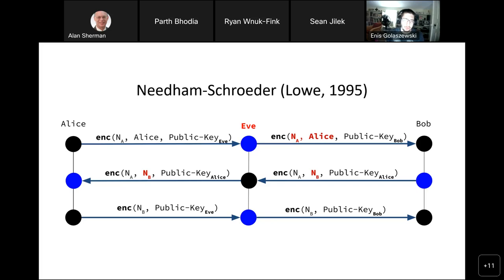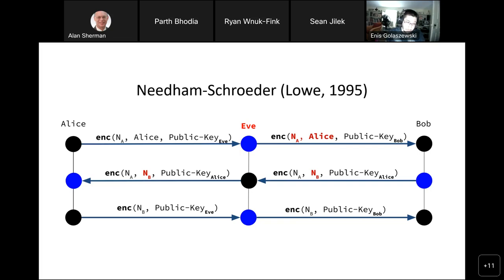Alice initiates a protocol with Eve, instance P of Needham-Schroeder. Eve initiates another instance, Q, with Bob. Alice generates a random nonce — N subscript A — which is important. There's also a nonce for Bob, N subscript B. These are randomly generated values unique to a specific protocol instance, and are generated with cryptographic number generators, so it should be hard for an adversary to preempt them.